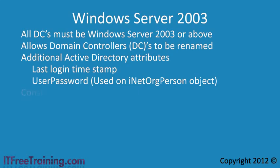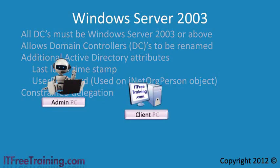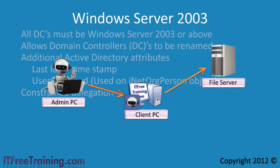The next feature is constrained delegation. To understand this, you first need to understand delegation itself. Consider this example: an administrator wants to install an application on a user's computer. They send their username and password to the client's computer which allows them access, then send a command telling the client to connect to a file server to get the install files. The client's computer needs credentials to access the file server — this passing of credentials is called delegation.